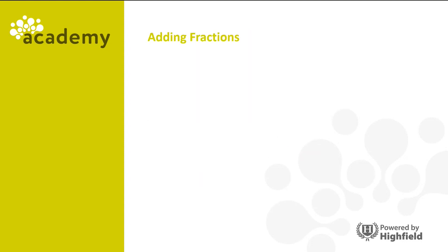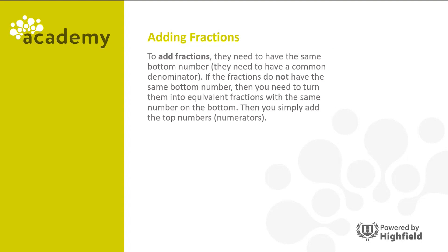Let's look at adding fractions. To add a fraction, they need to have the same bottom number, which is called a common denominator. If the fractions don't have the same bottom number, then we need to turn them into equivalent fractions with the same common denominator. Then all you have to do is add the numerators, or the top numbers.